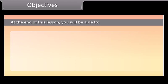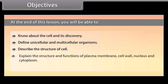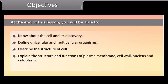Objectives: At the end of this lesson you'll be able to know about the cell and its discovery, define unicellular and multicellular organisms, describe the structure of the cell, and explain the structure and functions of the plasma membrane, cell wall, nucleus, and cytoplasm.